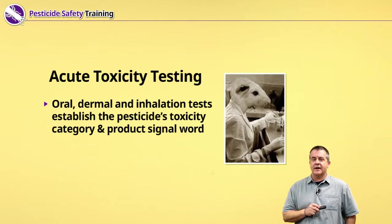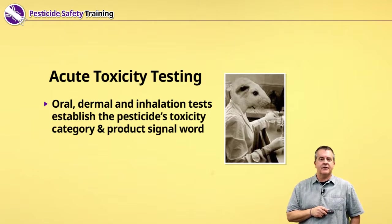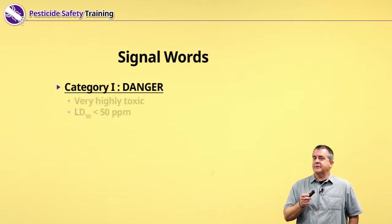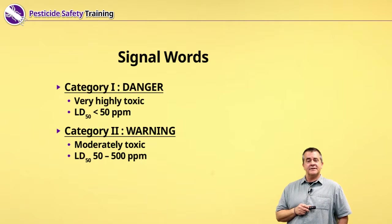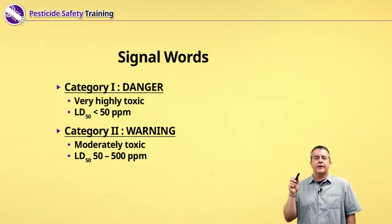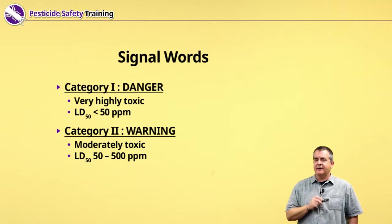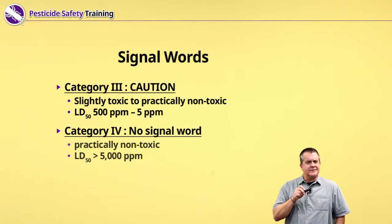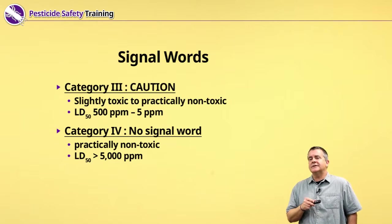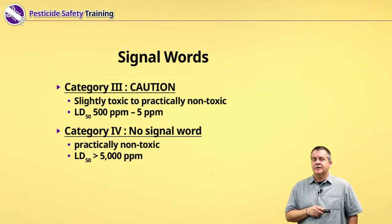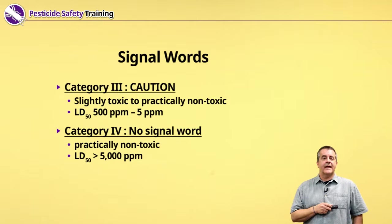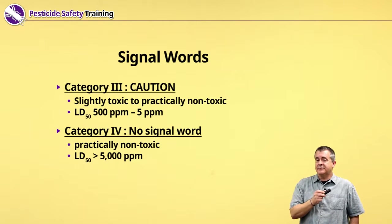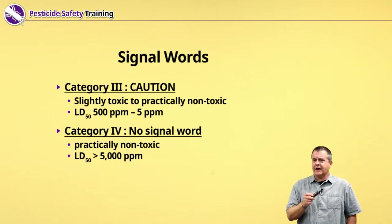The signal word appears on the pesticide label and is your first and best indication of the risk that pesticide poses to you. Starting from the most toxic: category one's signal word is DANGER — very highly toxic pesticides with rat LD50 values less than 50 parts per million. Category two's signal word is WARNING — moderately toxic compounds, LD50 values from 50 to 500. Category three's signal word is CAUTION — slightly to practically non-toxic, LD50 values around 500. Category four has no signal word — compounds so low in toxicity risk they don't require one.